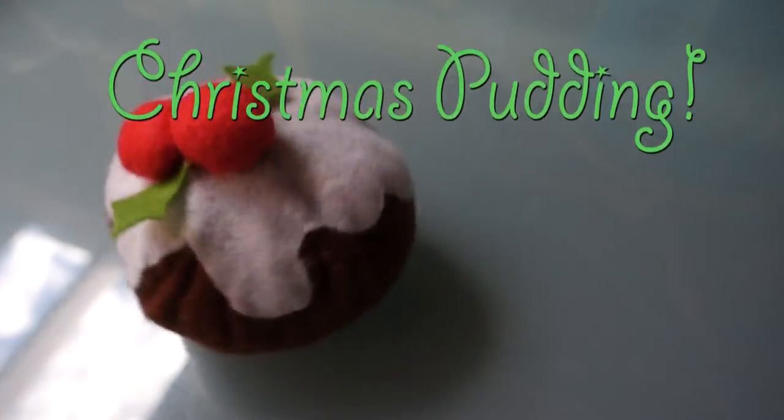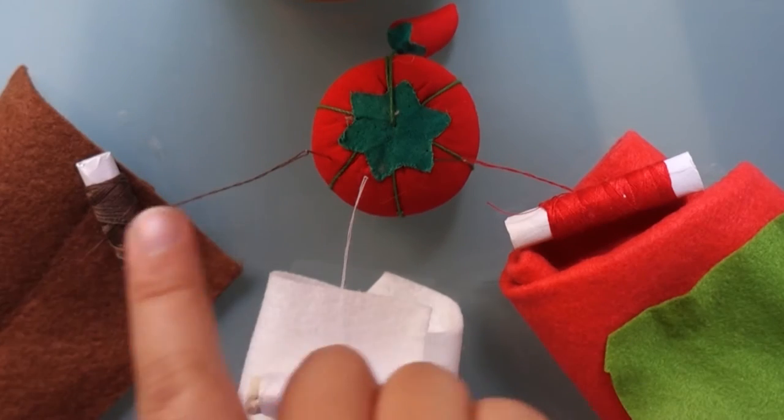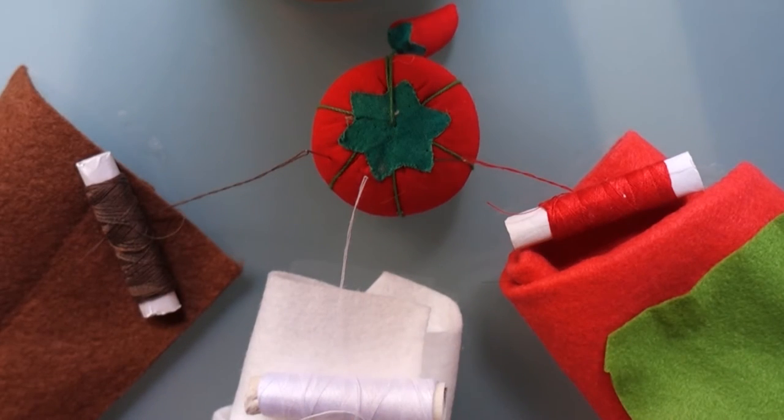It's Felt Food with Kartika Creations. This episode, a Christmas Pudding. Now the sewing tomato tells us we need the following felts and threads, plus your fabric scissors.